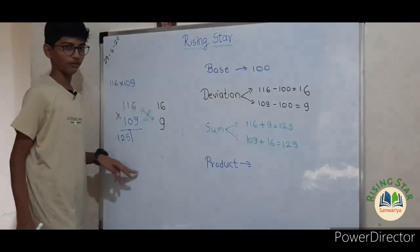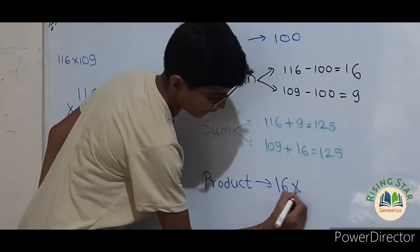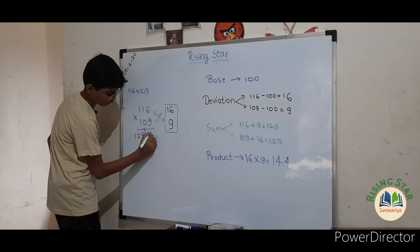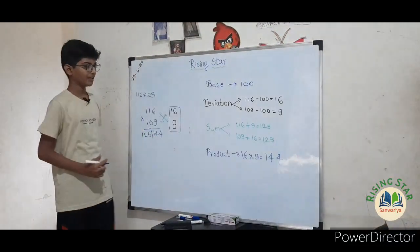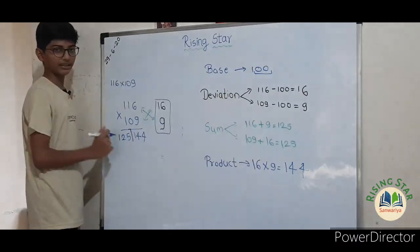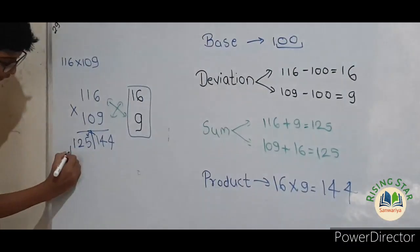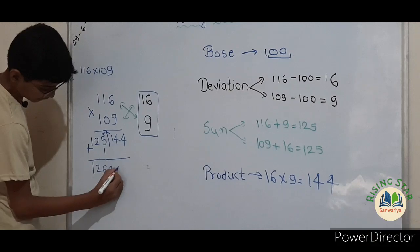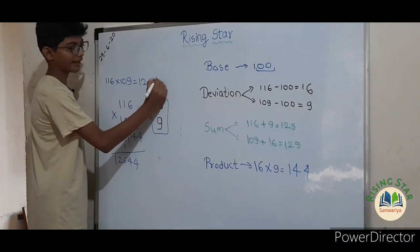Now let's write the product — you have to multiply the deviations. Sixteen into nine equals one hundred and forty-four. But remember, the number of zeros in the base and the number of digits on the product side should be equal. Here there are two zeros but three digits in one hundred and forty-four — this is not equal, so carry the one over to the sum side. One hundred and twenty-five plus one equals one hundred and twenty-six, and write forty-four on the product side. Therefore, one hundred and sixteen into one hundred and nine equals twelve thousand six hundred and forty-four.